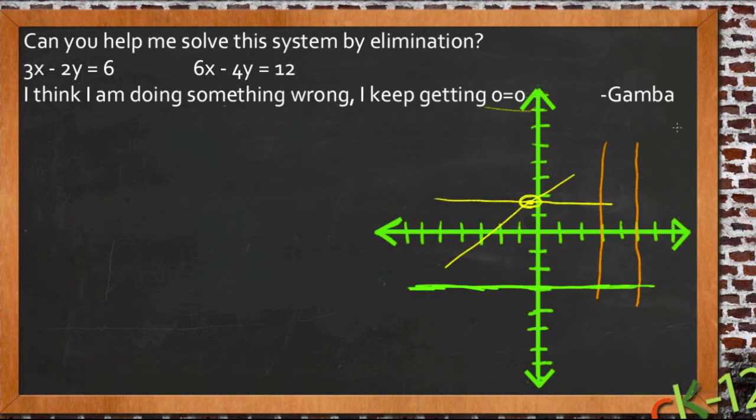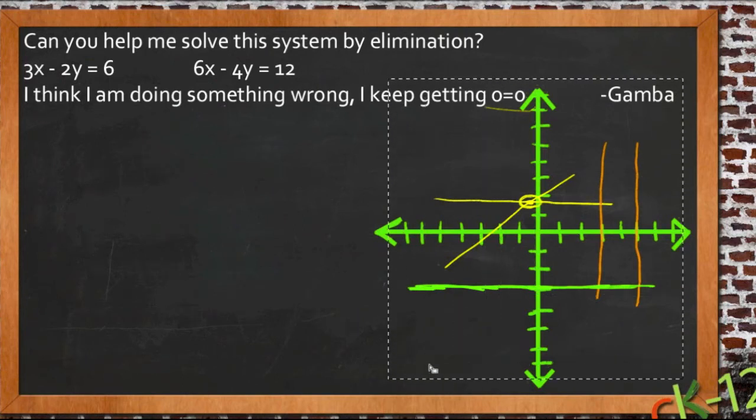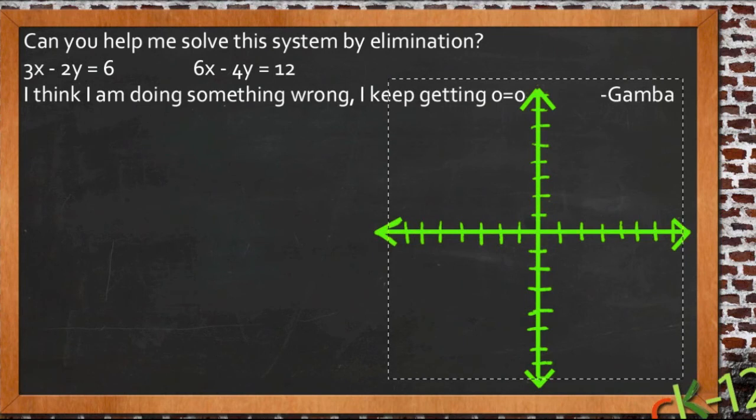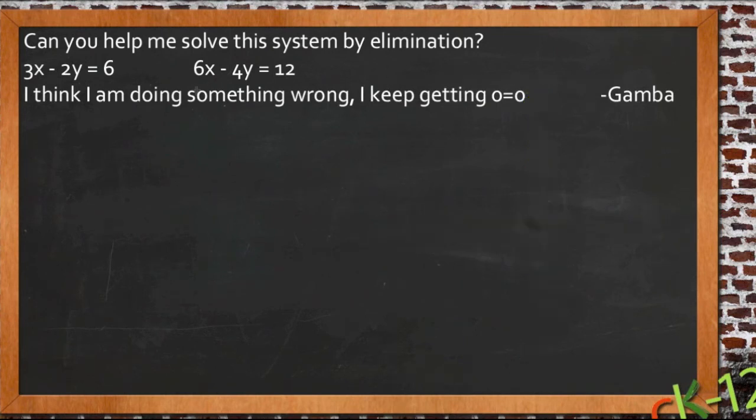And my guess is we're going to find that when Gamba was solving this equation right here, that he was running into one of those special situations. So let's take a look at what happens when we actually solve his system here using elimination. First we have 3x minus 2y equals 6, and 6x minus 4y equals 12.